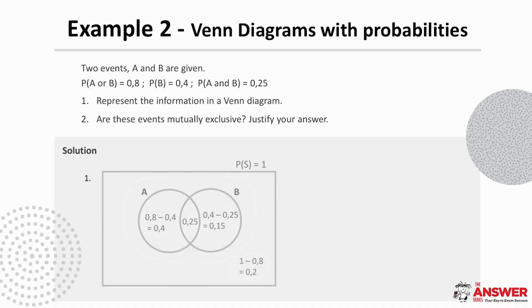The second part of the question is asking whether these events are mutually exclusive. We are given in the information that the probability of A and B is 0.25 and so we can conclude that these events are not mutually exclusive because the probability of A and B is not equal to 0.